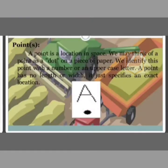A point is a location in space. We may think of a point as a dot on a piece of paper. We identify this point with a number or an uppercase letter. A point has no length or width. It just specifies an exact location.